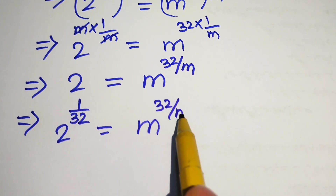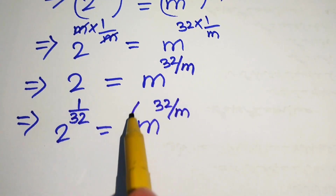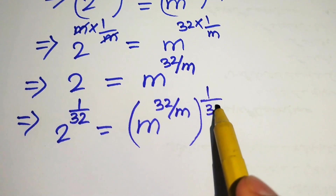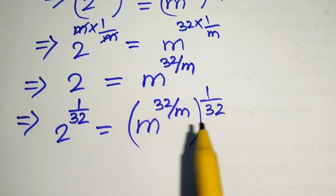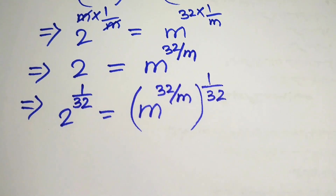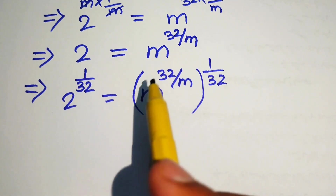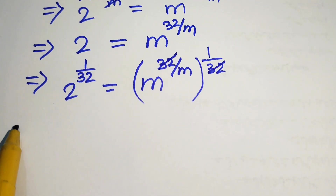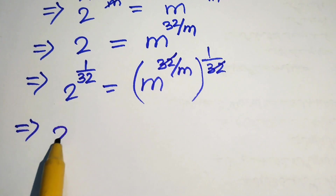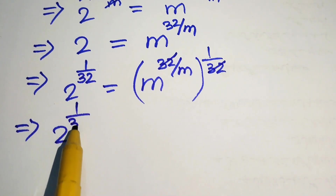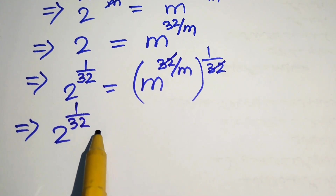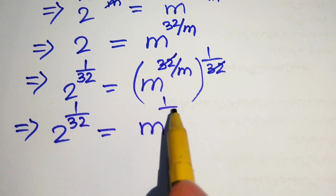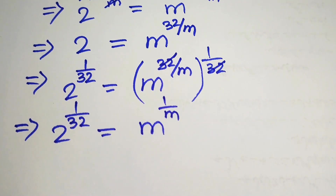This 32 is cancelled out by the other 32, and we obtain 2 to the power of 1 over 32 equals m to the power of 1 over m.